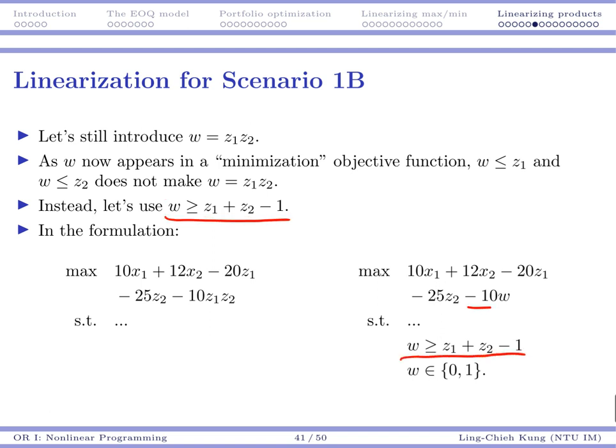So how does that work? Well, you want to make w as small as possible. But if your z1 is 1 and z2 is 1, this is requiring your w to be 1. If you want to produce both products, you need to pay that $10.